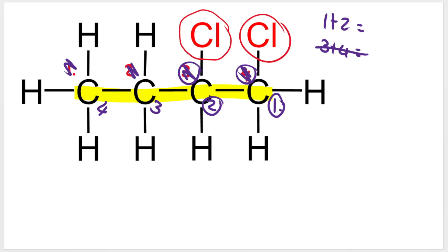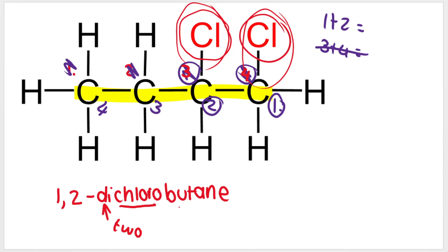So what will my name be? On carbon 1 and on carbon 2, 1,2-dichlorobutane. Because on carbon 1 I have a chlorine, on carbon 2 I have a chlorine, so that's where the chloro comes from. Di because I've got two of them, and the longest chain is four carbons, so butane.